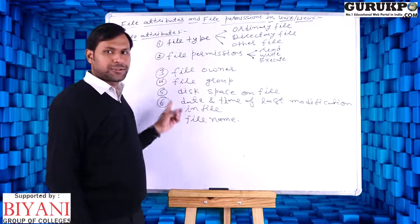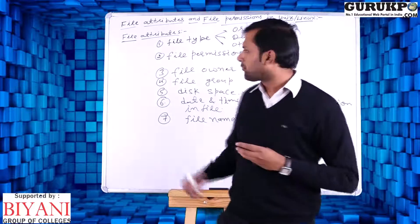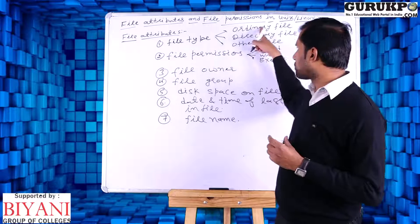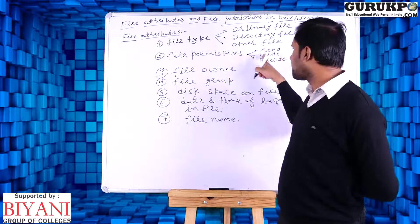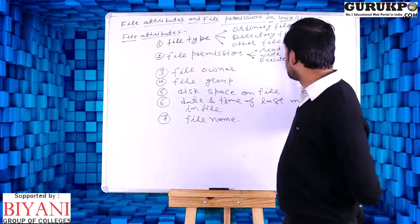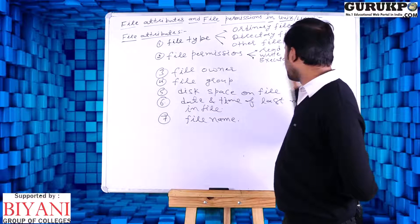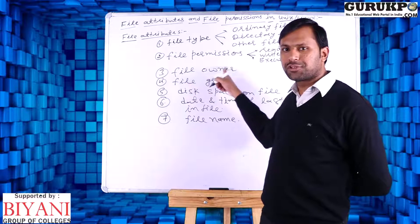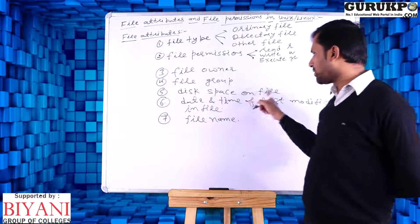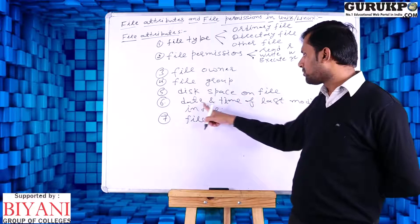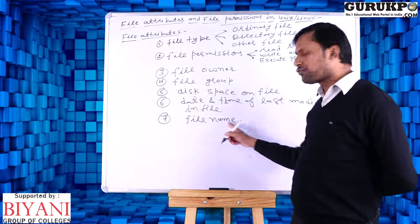These all are file attributes — they define the properties of a file. File type has three types: ordinary, directory and other. Second is file permissions: read, write, execute, in short rwx. Third is file owner, fourth is file group, fifth is space occupied by file, sixth is last time file modified, seventh is file name.